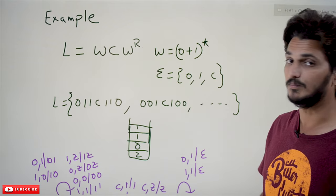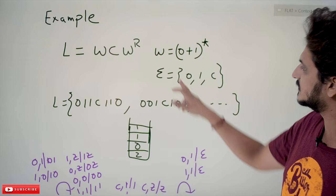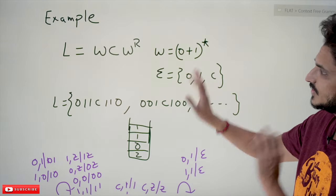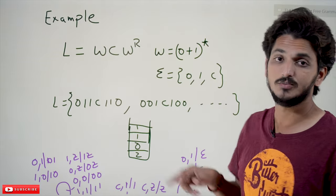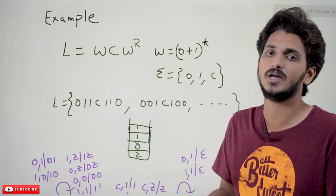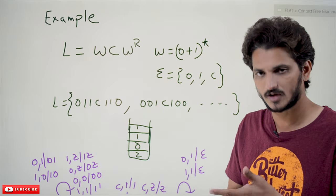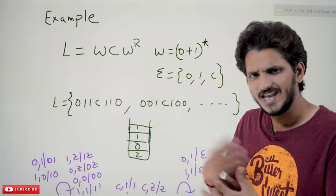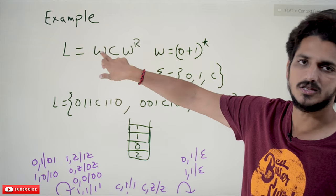Coming to the next example: L = w c w^r, where w = (0+1)* and the input alphabet Σ = {0, 1, c}. The language consists of strings where 'w' is any string over zero and one — you can take epsilon, zero, one, zero-one, one-zero, any string obtained using zero or one.